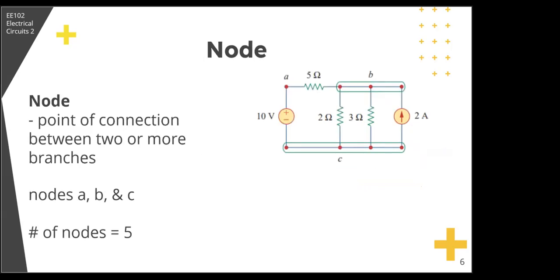Second is the node. A node is the point of connection between two or more branches. A node is usually indicated by a dot in a circuit. If a short circuit, that is a connecting wire, connects two or more nodes, these nodes constitute a single node.